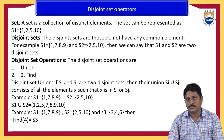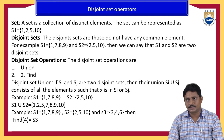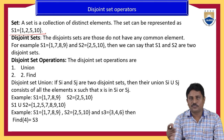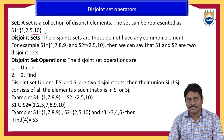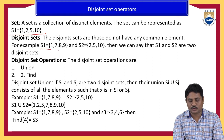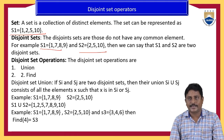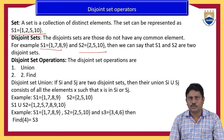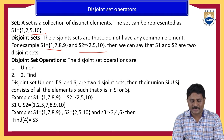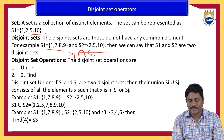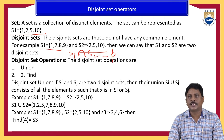Now, a set is a collection of distinct elements — for example, S equals one, two, five, ten. Disjoint set means suppose you take S1 equal to one, seven, eight, nine and S2 equal to five, ten. S1 and S2 don't have any common elements, so S1 intersection S2 is empty. S1 and S2 are called disjoint sets.